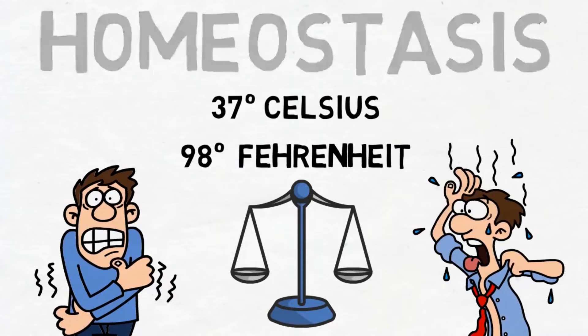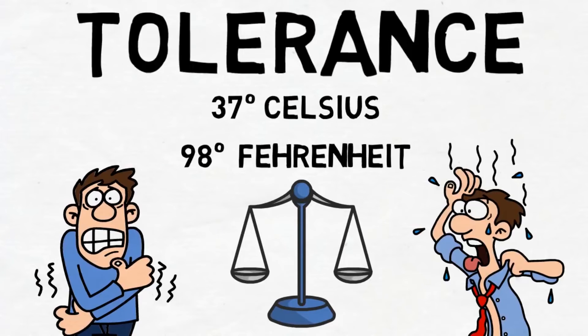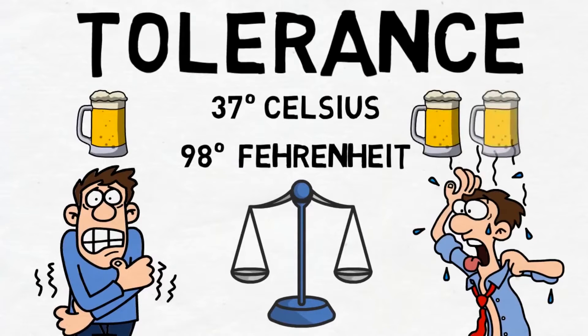But there is another way homeostasis manifests itself, and that is through tolerance. For example, someone who rarely drinks alcohol will get drunk really fast. But someone who drinks on a regular basis will have to drink more alcohol, because their body has developed a tolerance to it. Essentially, it takes more and more alcohol to make them drunk, because they've become less sensitive to its effects.